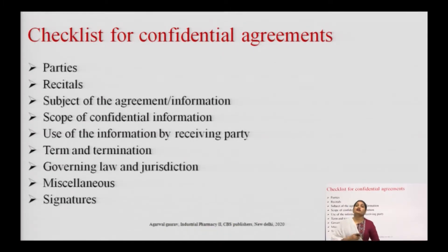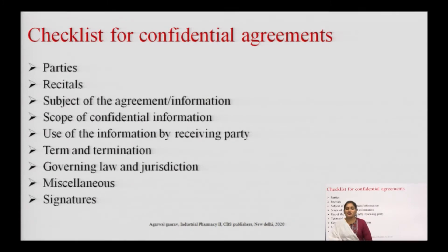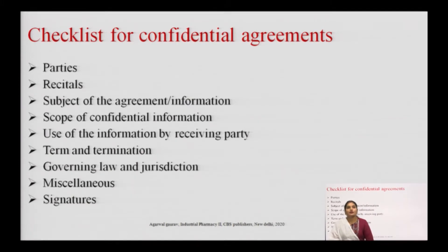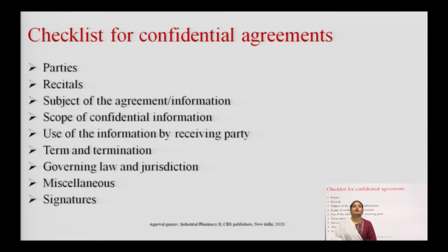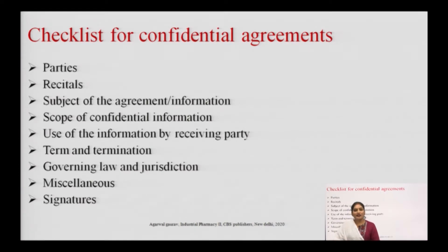The checklist for a confidentiality agreement specifies what must be included. The items are: parties, recitals, subject of the agreement or the information, scope of the confidential information, use of the information by the receiving party, terms and termination, governing law and jurisdiction, miscellaneous, and signature.